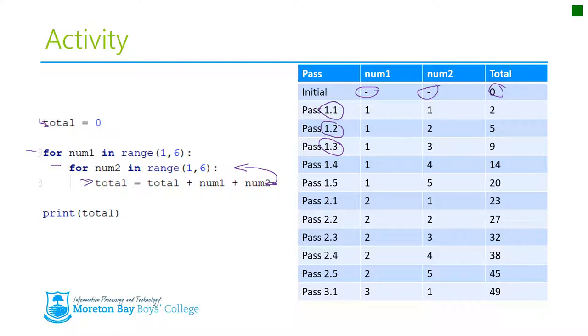num1 is 1, num2 is 2, and the answer is 5. Because we're adding 1 and 2 to the previous value of total, which is 2. So again, we come back over here, and change the colour, and come back over here again to this for range, and we find out that